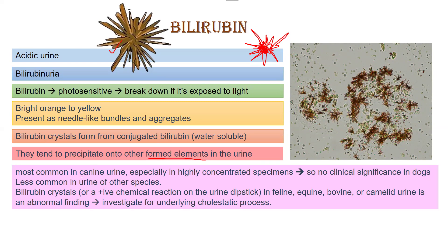As far as dogs are concerned, bilirubin crystals are most common in canine urine, especially in highly concentrated urine samples. It is of no clinical significance in dogs, as it does not indicate any pathologic disease underlying in the body.